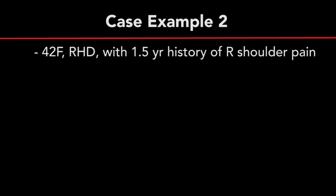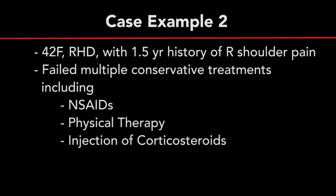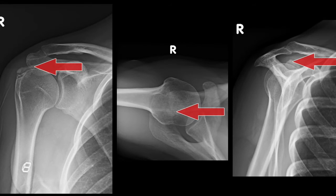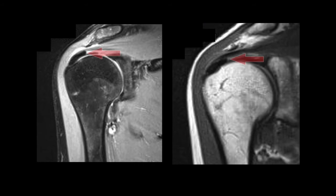Case 2 is a 42-year-old right-hand dominant healthy active female who presents with a one-and-a-half-year history of insidious onset right shoulder pain, worse with overhead activities and lifting weights. The patient had tried and failed multiple non-operative treatment modalities, including activity modification, anti-inflammatories, and steroid injections over the past year. Radiographic views demonstrate large calcific deposits in the rotator cuff just proximal to the greater tuberosity, with no other bony abnormalities. MRI delineates the calcium deposits in the supraspinatus tendon, involving approximately 90% of the supraspinatus tendon thickness, just proximal to its insertion on the greater tuberosity.